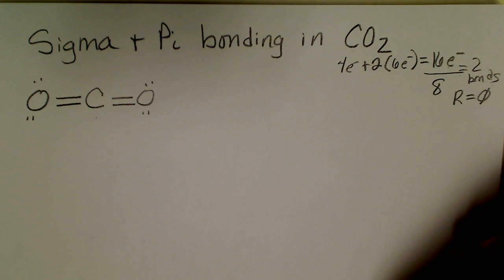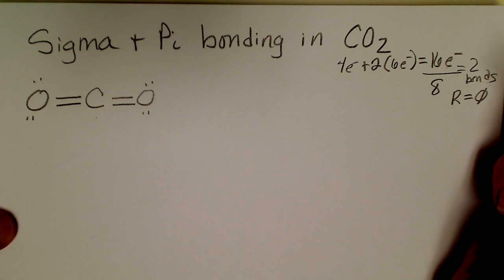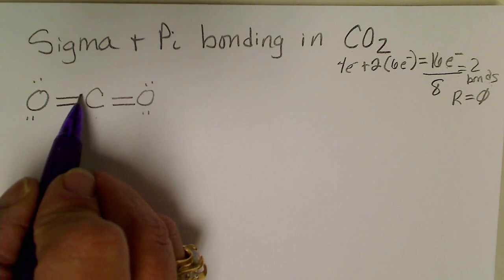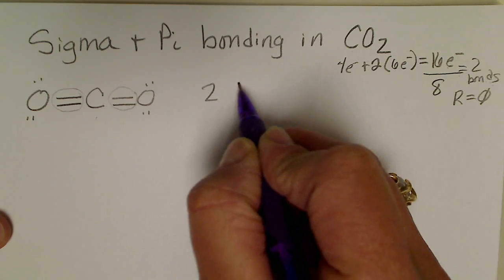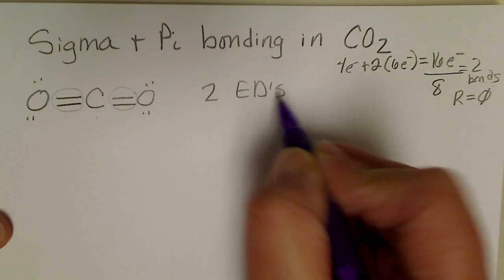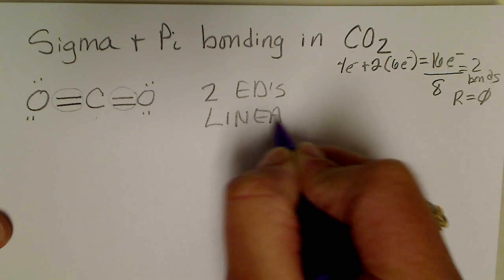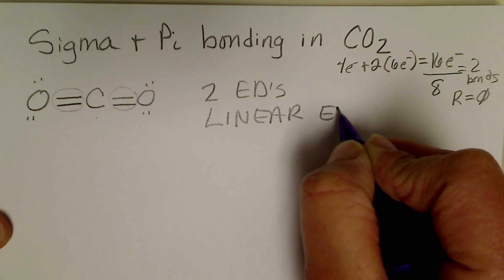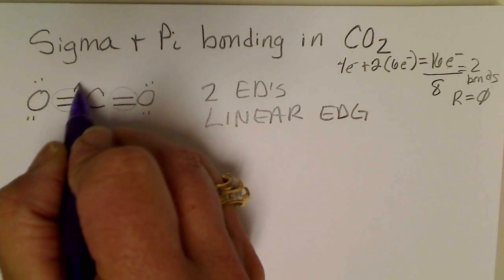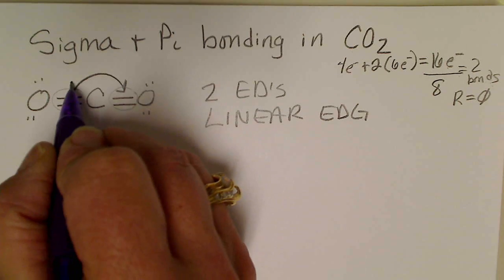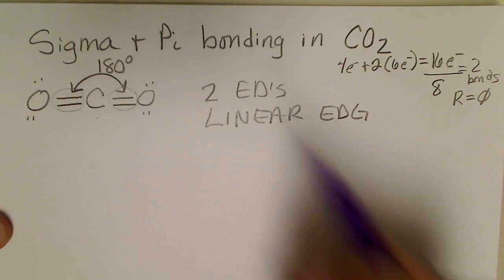We can see that there are two electron domains. Two electron domains means we have a linear electron domain geometry, and electrons are going to repel and maximize the angle between them, so this would be 180 degrees.